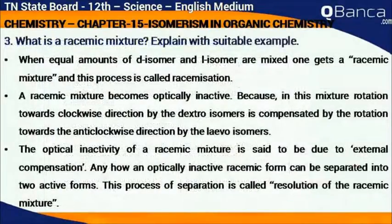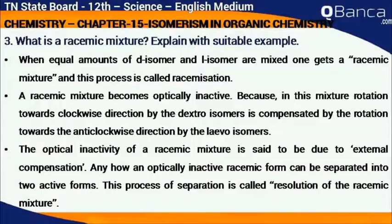What is a racemic mixture? Explain with a suitable example. When equal amounts of D isomer and L isomer are mixed, one gets a racemic mixture, and this process is called racemization. A racemic mixture becomes optically inactive because the rotation towards the clockwise direction by the dextro isomers is compensated by the rotation towards the anticlockwise direction by the levo isomers.